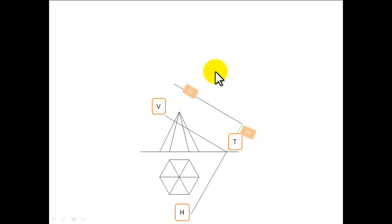And we are going to take the height from the XY line to the VT and extend it up here. We are going to join this point to our X1 Y1 line and get the true inclination of the plane.